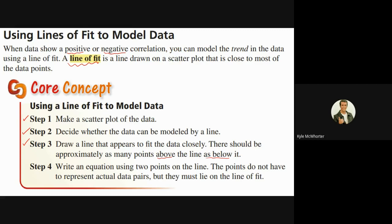Step four: we're going to pick two points from that line. The points just have to be on the line — they don't have to be actual data points from the scatter plot, but they have to be on the line. Then we find the slope and use y equals mx plus b to get the equation for that line.